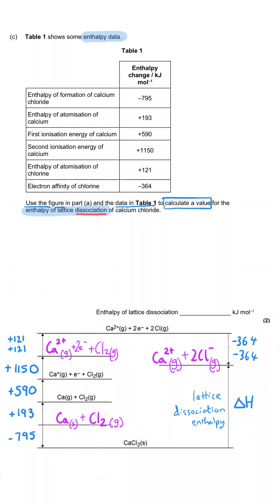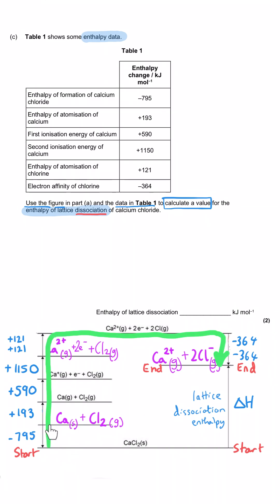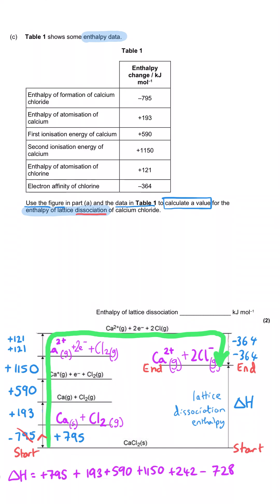We're trying to find the value for the lattice dissociation arrow, starting at the ionic compound line and finishing at the gaseous ions. Using the Born-Haber cycle, we go the other way around: against the formation arrow gives +795, then we go with each of the remaining arrows in turn. Summing all these numbers gives a lattice dissociation enthalpy of +2242 kJ mol⁻¹.